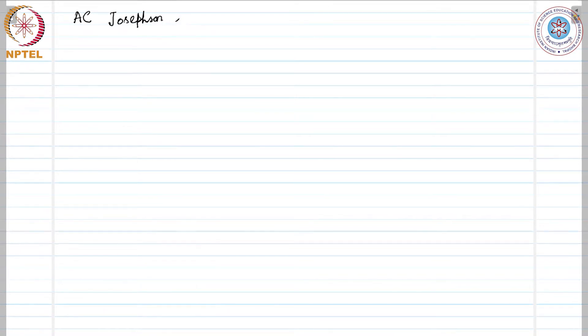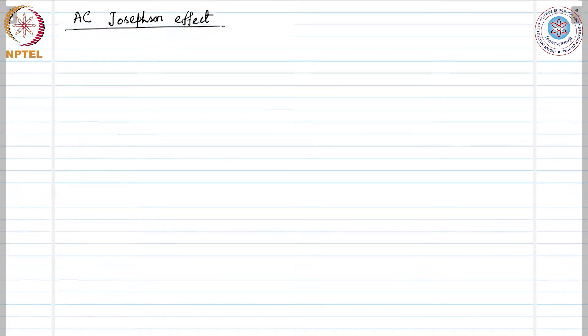After this, let us move on to the AC Josephson Effect. In developing the mathematical treatment of the AC Josephson Effect, we will heavily rely on whatever we have done for the DC Josephson Effect. The AC Josephson Effect is where we apply a DC voltage and get an oscillatory current.